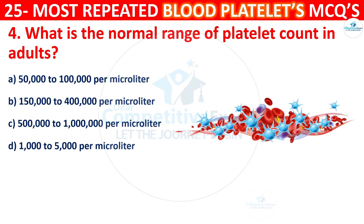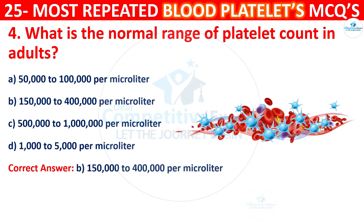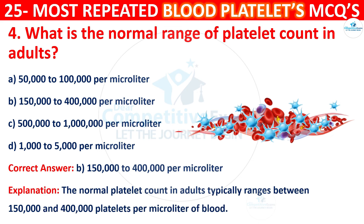The correct answer is 1 lakh 50,000 to 4 lakh per microliter. The normal platelet count in adults typically ranges between 1 lakh 50,000 and 4 lakh platelets per microliter of blood.